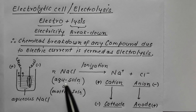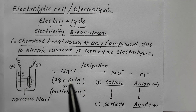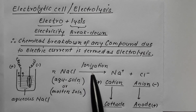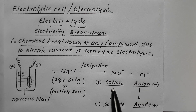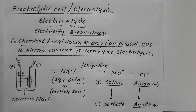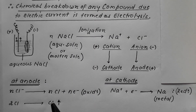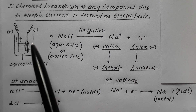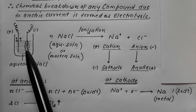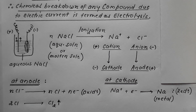For example, if you have taken an aqueous or molten solution of NaCl in an electrolytic tank with two electrodes installed — NaCl, when aqueous or molten, undergoes ionization to produce sodium ions (cations) and chloride ions (anions). When electric current is passed, cations move toward the cathode and anions move toward the anode. At the anode, chloride ions lose electrons (oxidation), and 2Cl combine to form Cl2, which is liberated. At the cathode, sodium ions gain electrons (reduction), convert into metal, and get deposited.